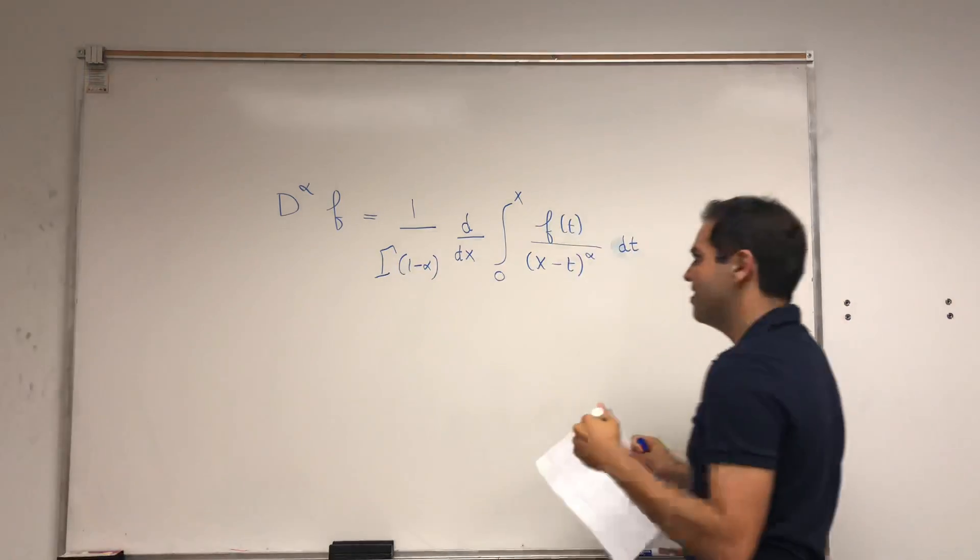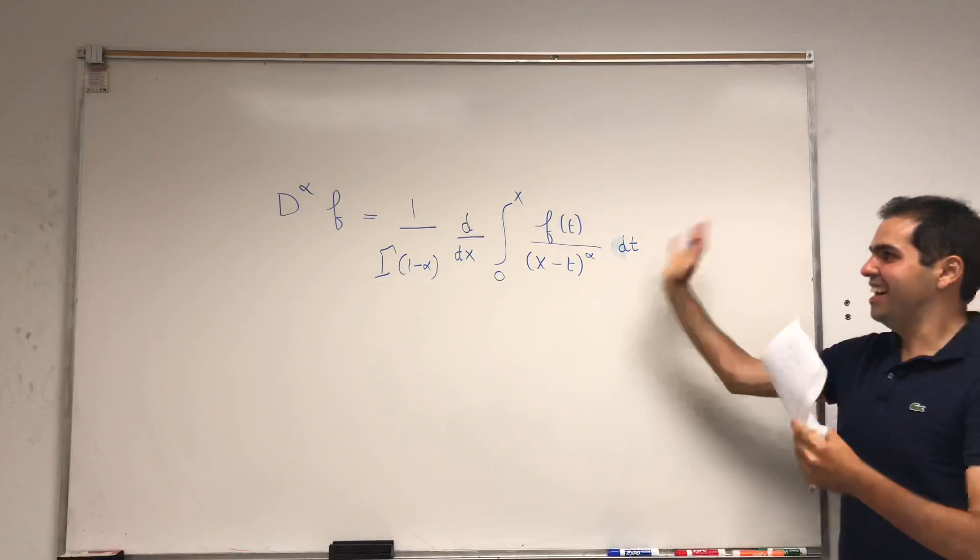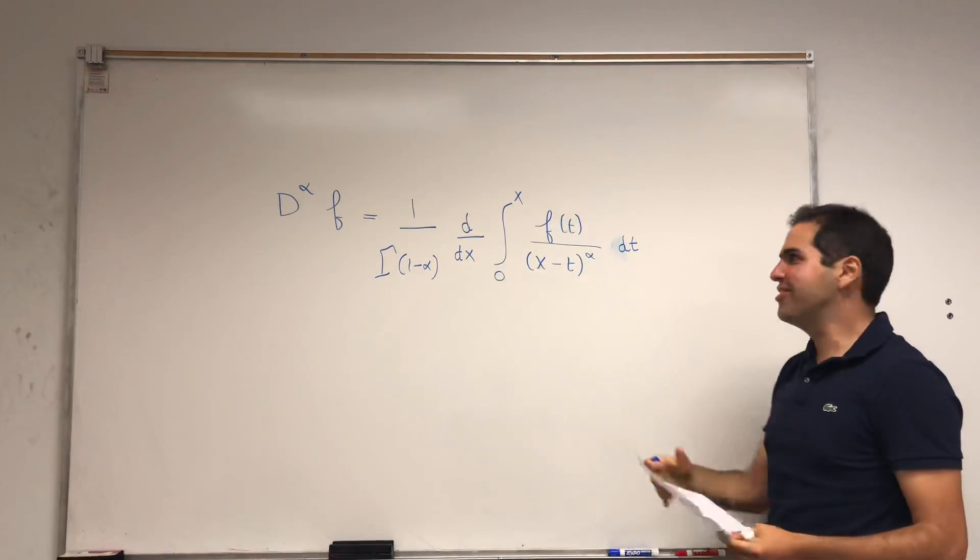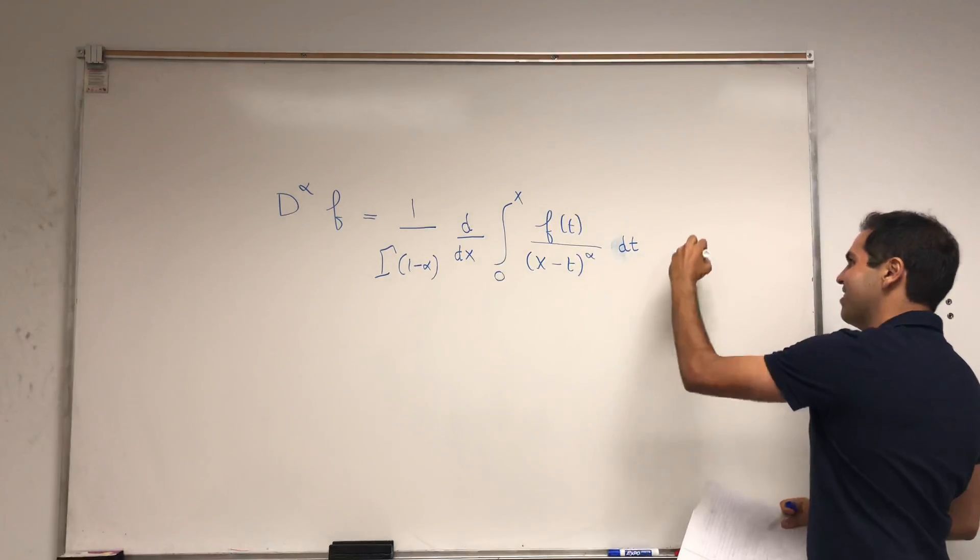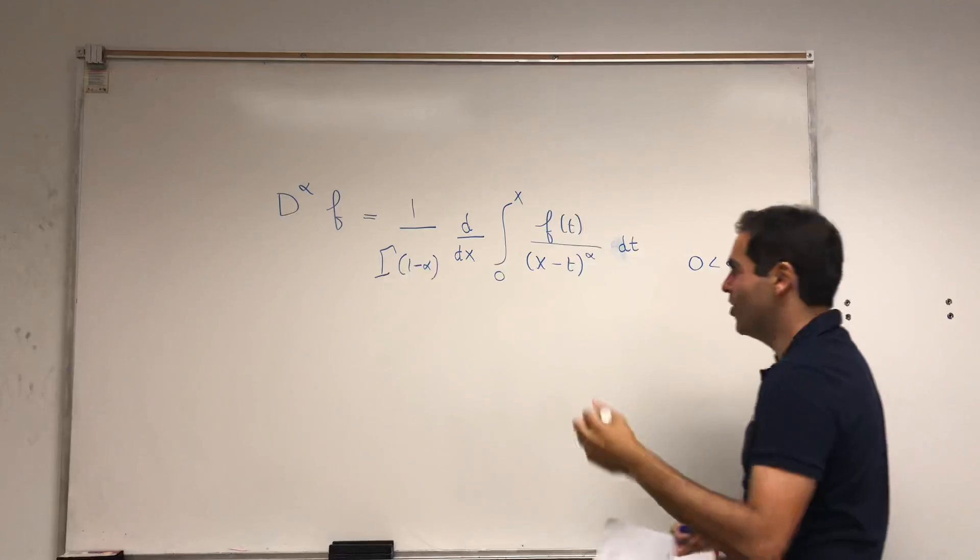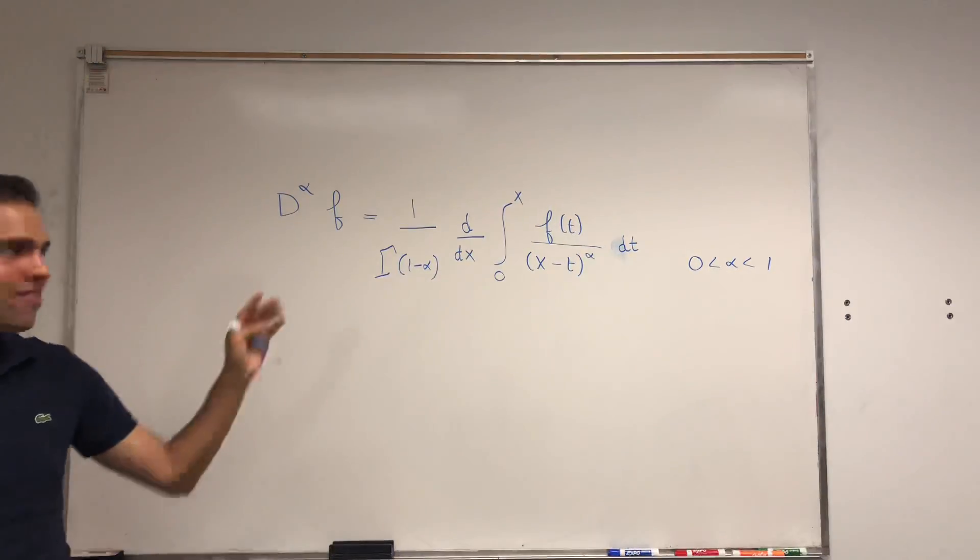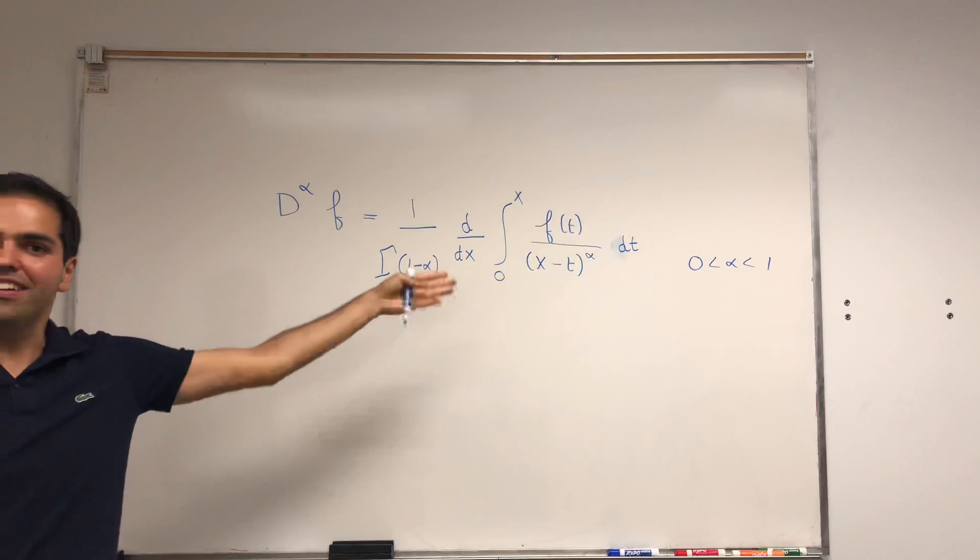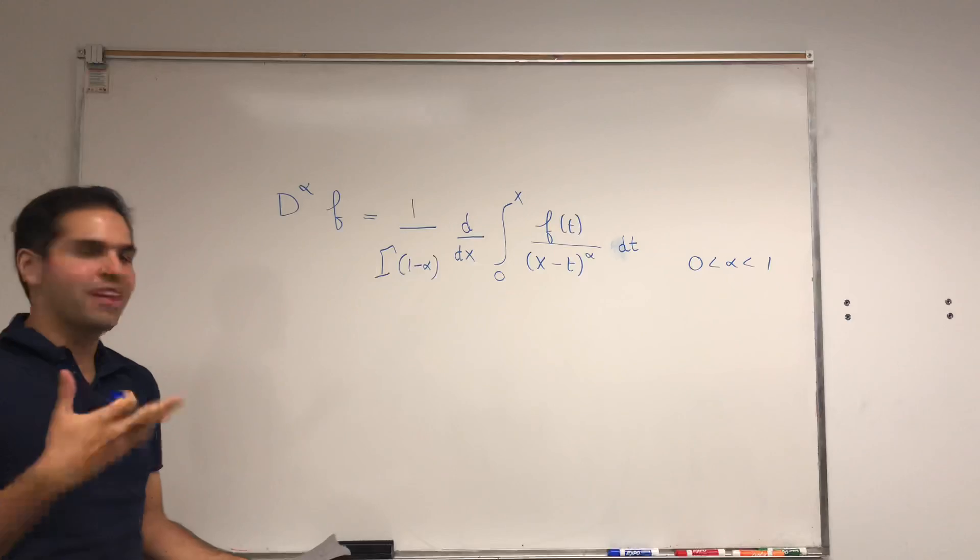And ta-da, this is the definition of the fractional derivative. Just one little thing though: this is only valid for alpha between zero and one. So don't try to check that this gives you the derivative because it doesn't, because alpha is between zero and one.